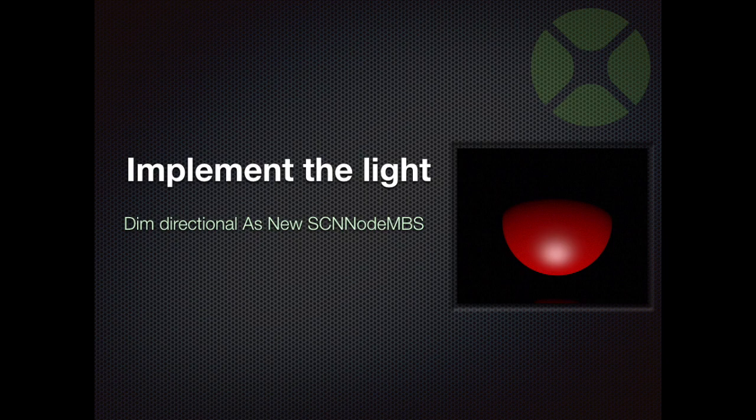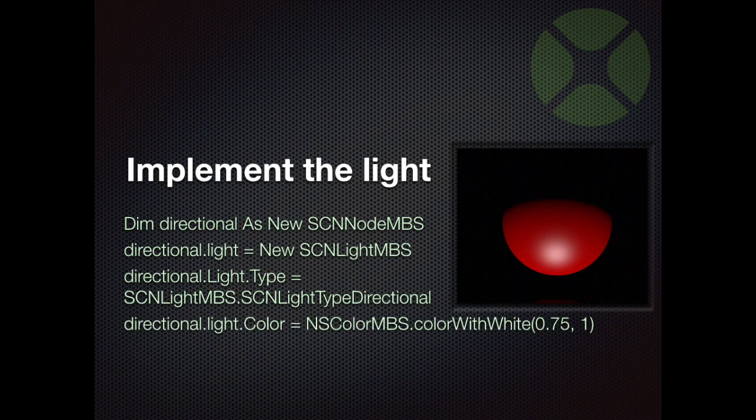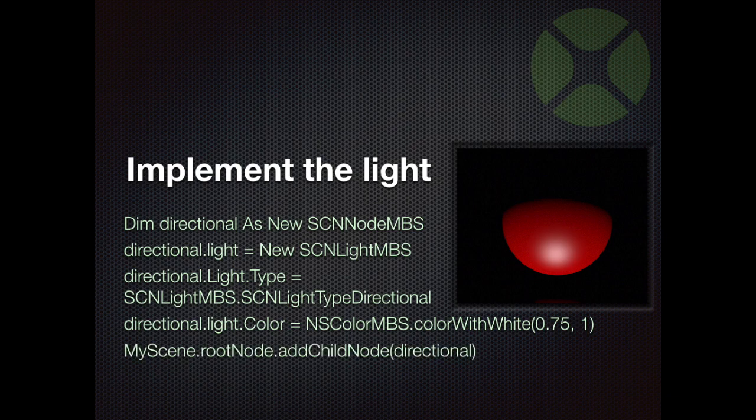Now I'll show you how to integrate light sources into your scene. At first we initialize a new node. In the property light we have to initialize a new light node. After that we can define the light type, the light color, and so on. In the end we add the node to our scene. Because it is a normal node in our scene, we can determine its position as usual.